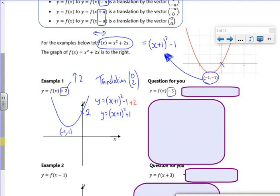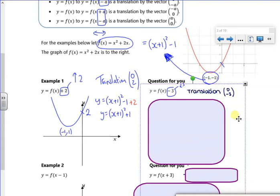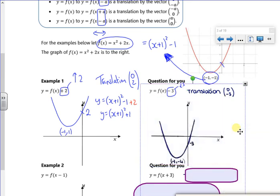It's going 3 down. So that's a translation minus 3. So the whole thing goes down by 3. So I've got my graph there. In terms of the equation, it was x plus 1 squared minus 1. And then I'm taking away 3, because it's going down an extra 3. And I've got that. So that's your question for you.